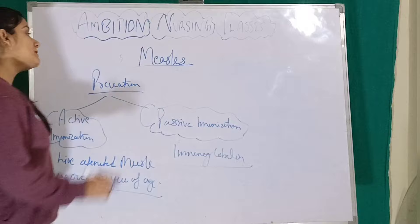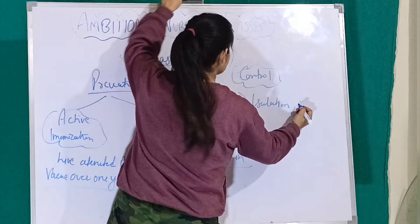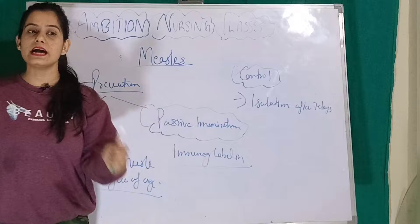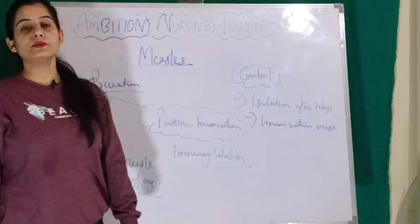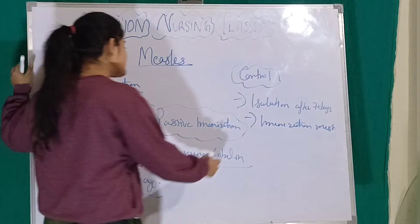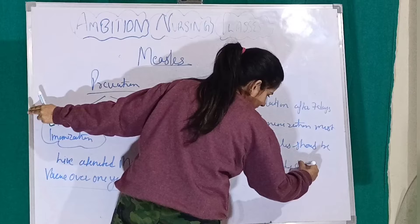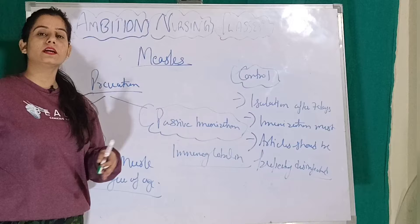Next is control. In control measures: first, we isolate the patient — isolation after seven days from when the rashes start appearing. Immunization is a must. And lastly, the articles used by the patient should be properly disinfected — disinfected means the infection that has spread is cleaned out properly.